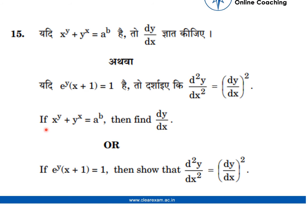We are given two questions. First, if x to the power y plus y to the power x is equal to a by b, then we have to find dy by dx. Second, if e to the power y times (x plus 1) is equal to 1, we have to show that the double differentiation d²y/dx² is equal to (dy/dx) the whole square. Let's look at the first question.